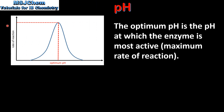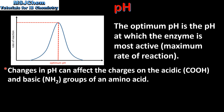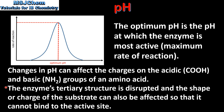Next we look at the effect of pH on the activity of an enzyme. As we can see from this graph, the rate of reaction increases until the optimum pH. The optimum pH is the pH at which the enzyme is most active. Changes in pH can affect the charges on the acidic and basic groups of an amino acid. The enzyme's tertiary structure is disrupted and the shape or charge of the substrate can also be affected so that it cannot bind to the active site.